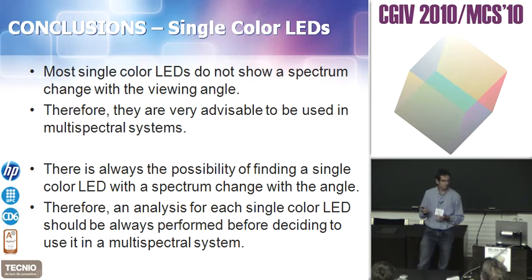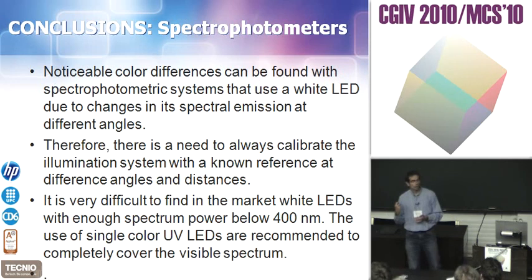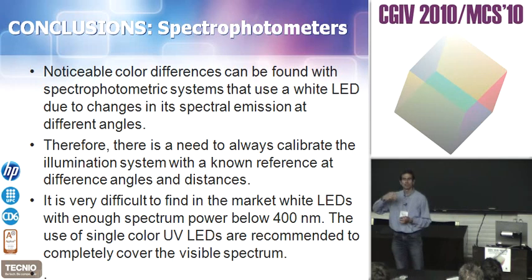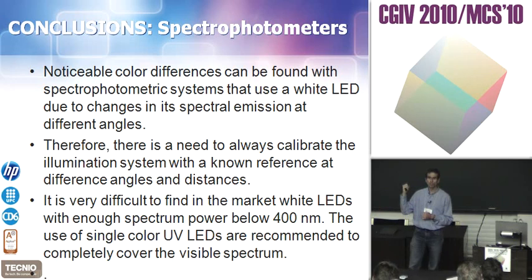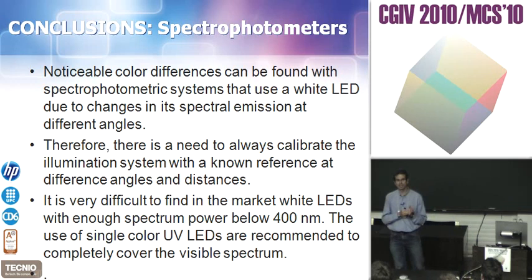Regarding spectrophotometers: those using white LEDs as light sources should be calibrated at different distances and different angles if we don't want bad color accuracy measurements. If you have a system where distance and angle don't change — like a contact spectrophotometer — you won't have any problem. But if the distance to the sample changes, using a white LED as a light source can cause bad color accuracy. Also, white LEDs alone don't have power below 400 nanometers, so if you want a spectrophotometer covering 380 to 730 nanometers, you should use white LEDs in combination with UV color LEDs.